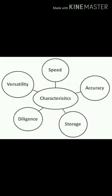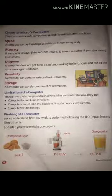Now come to the next topic that is characteristics of computer, or you can say the features of computer. The first point is speed. As we know, computer works very fast. It can do large number of calculations very quickly. And the second point is accuracy. It means computer always gives correct result and never does any kind of mistakes.